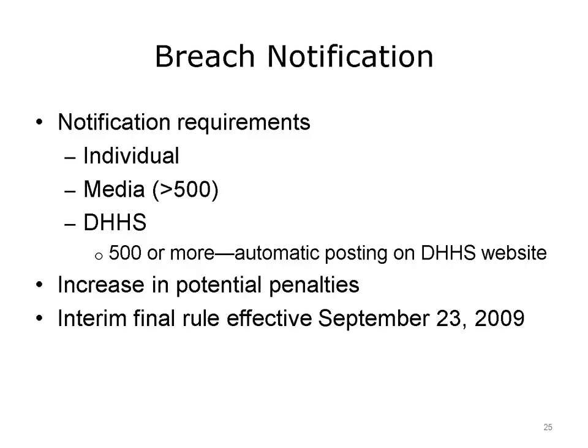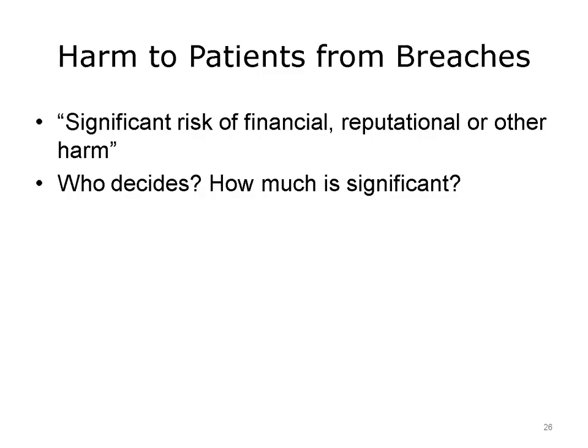Finally, there is also an increase in potential penalties. The interim final rule was effective September 23, 2009, and it was expected that a final rule would be announced after a short comment period. In fact, DHHS had a final rule all prepared, but in 2010, they decided it needed more work. As with the original HIPAA regulation, there were a huge number of comments, and they were often conflicting. One major area of conflict was on how to deal with the idea of harm from the breaches. The interim rule stated that breaches needed to be reported if there was significant risk of financial, reputational, or other harm. Health care facilities were expected to assess the degree of harm from any breaches, but there was disagreement as to whether they were the best people to make that decision. Also, it is difficult to determine how much harm is significant.